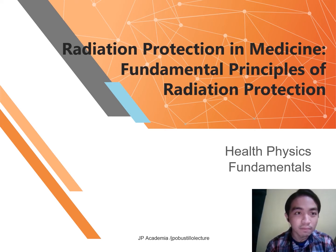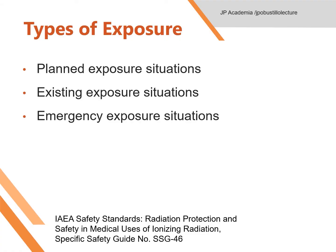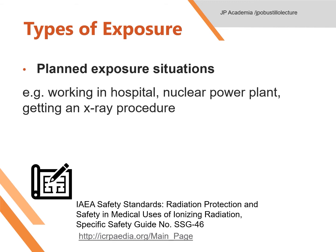We have three types of radiation exposure for this lecture. First is planned exposure situations. Second is existing exposure situations. Third, emergency exposure situations. Planned exposure situations are those where radiological protection can be planned in advance and exposures can be reasonably predicted. Examples are working in a hospital, especially in the department of radiology or nuclear medicine, working in a nuclear power plant facility, or getting an x-ray procedure for an annual physical examination.